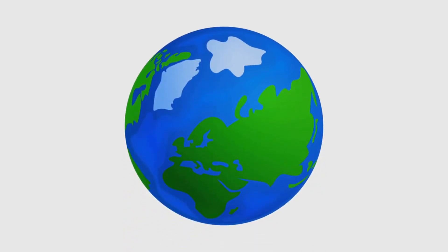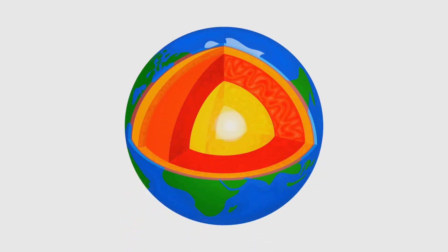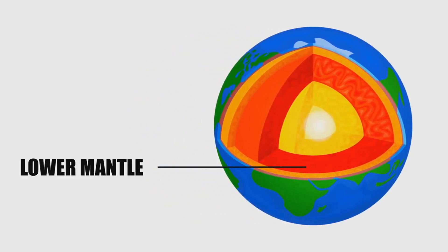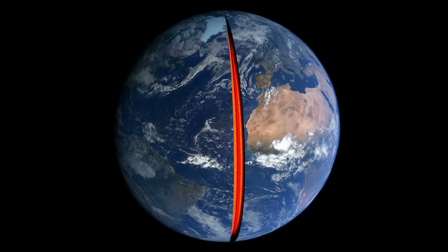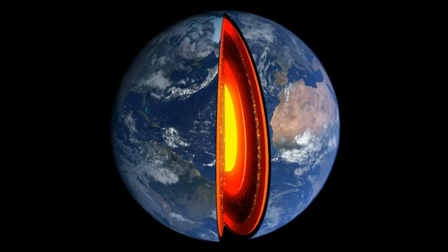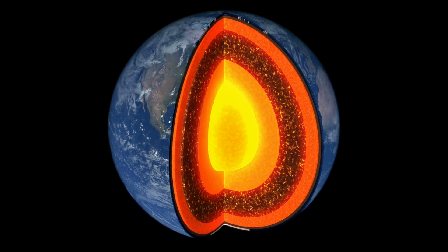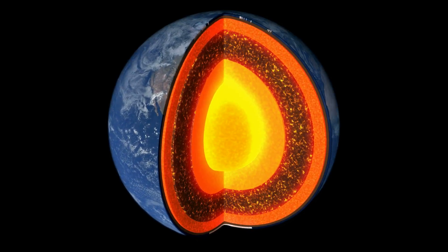Surrounding the core is the mantle, a thick layer of hot, semi-molten rock. The mantle extends up to 2,900 kilometers and is the largest layer of the Earth. The mantle is not entirely liquid. It behaves like a very viscous fluid over long periods.